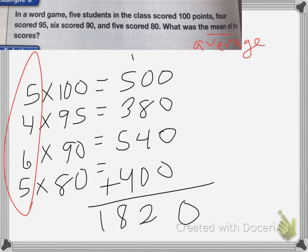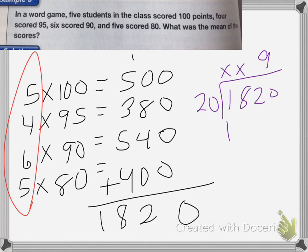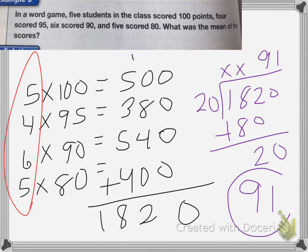I'm going to take 1,820 and divide it by 20 scores. 20 can't go into 1 or 18. It can go into 182, goes in nine times, which is 180. Subtract. 20 goes into 20 once. So the average, or the mean, of the scores is going to be 91.